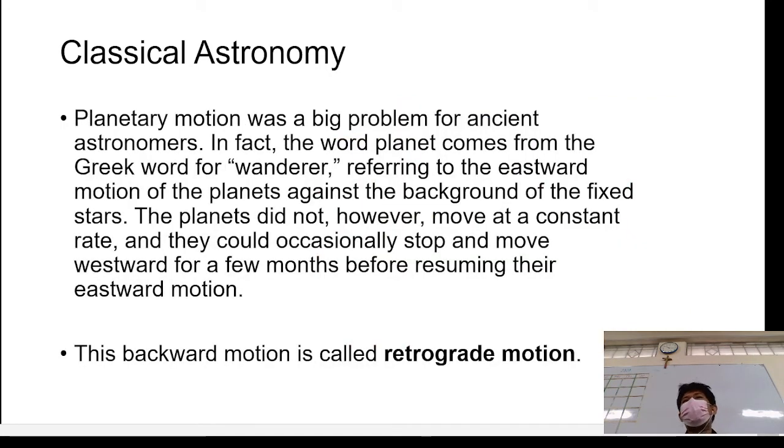However, there was this problem. They couldn't explain retrograde motion. Retrograde motion. So planetary motion was a very big problem for them. In fact, the word planet came from the Greek word wanderer, referring to the eastward motion of the planets. Relative to its background, which are the universe, those stars, which are really fixed, somehow, based on their observation. The planets move eastward. However, it's not that consistent. There are times that a few months or so, many times, the planet goes back. The planet goes back on its path. And they couldn't explain that.